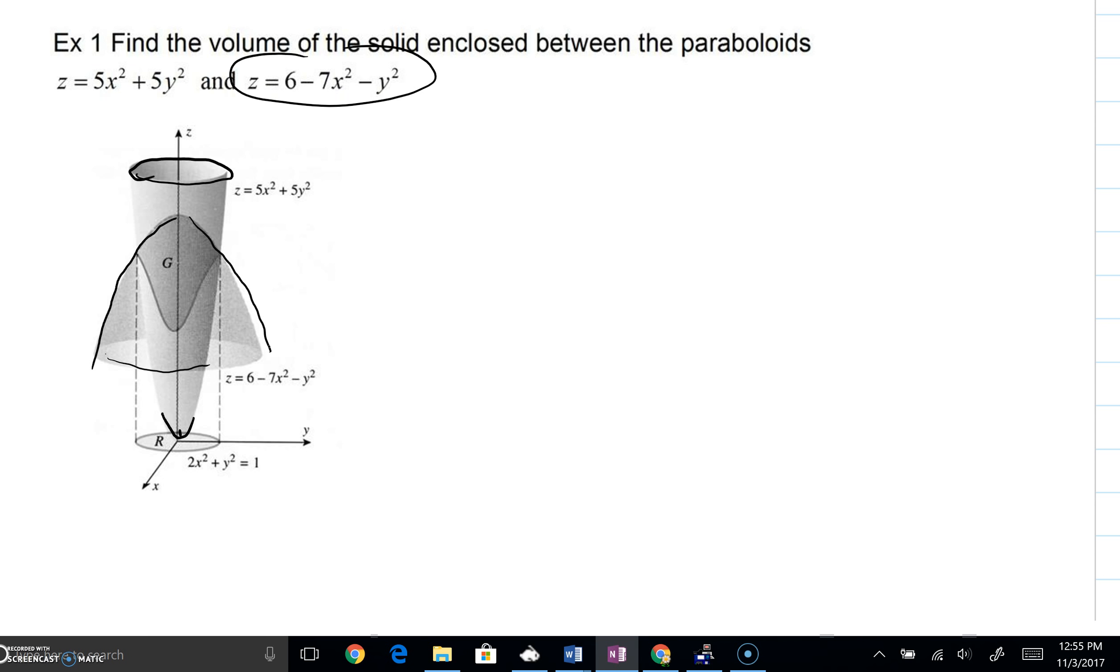Those two paraboloids cut into each other. They intersect each other. The author is even helping us out, saying they're going to be crossing somewhere around there, and they're going to form a solid. You can think, oh my goodness, we've got this solid encapsulated. How can we begin to make sense of what's happening with that solid's volume?